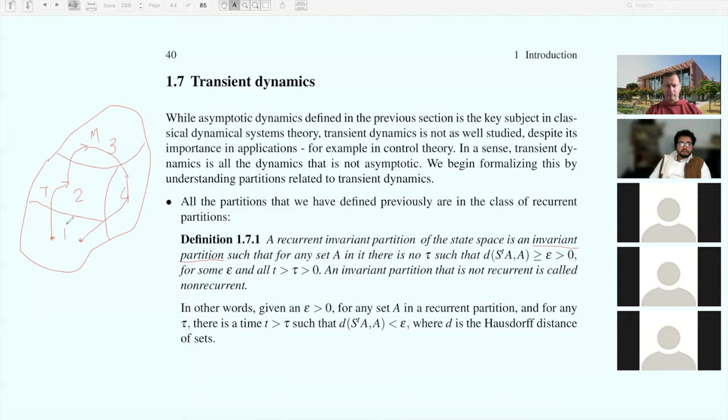A recurrent invariant partition has to be an invariant partition first. Then if you pick any set A in it, there is no time tau such that the distance between the forward image of A and A is bigger or equal than epsilon for some epsilon and all T bigger than that particular time.